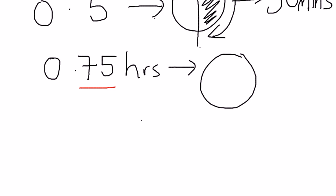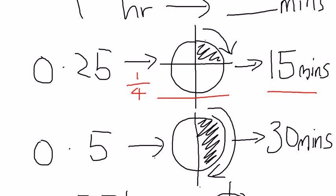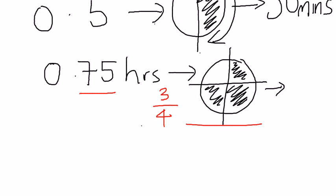So, if you cut this clock into four parts, 0.75 would actually be one, two, three. This will give you three quarters. Now, three quarters in minutes, what is it? If one quarter is 15 minutes, three quarters will be 45 minutes.